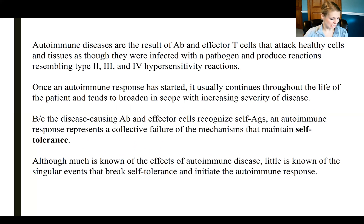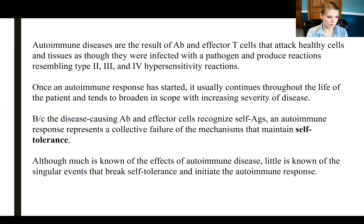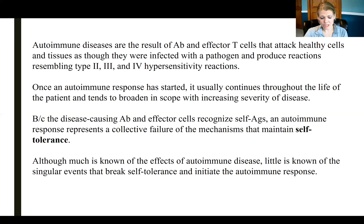Once autoimmunity is initiated, it usually continues throughout the life of the individual and can broaden in scope, increasing the tissues affected and the severity of disease. Once you have an autoimmune disease, it's pretty much going to be with you for the rest of your life. Because disease-causing antibodies and effector cells recognize self-antigens, that discrimination between self and non-self is lost — it's really a failure of tolerance, both central and peripheral, in B cells and T cells.